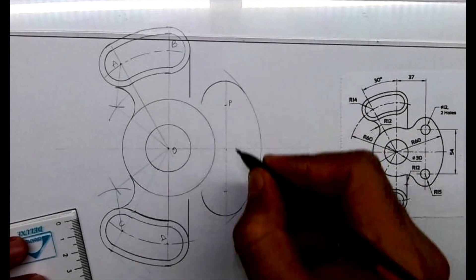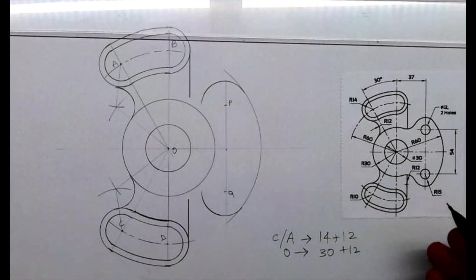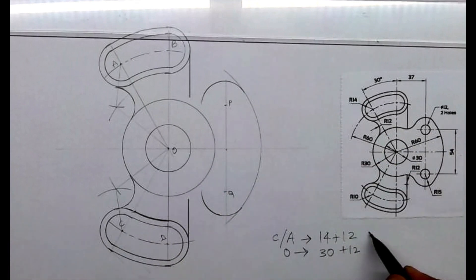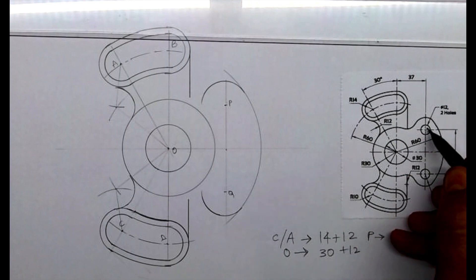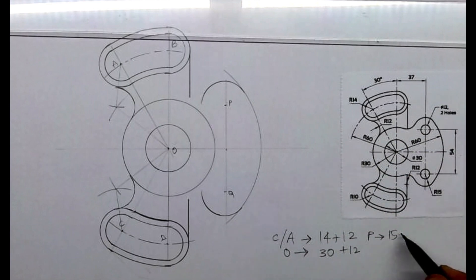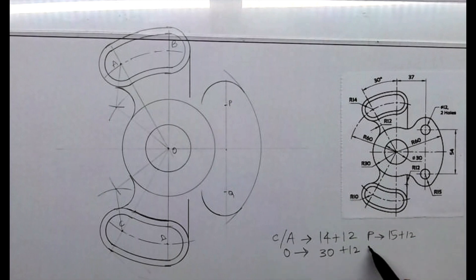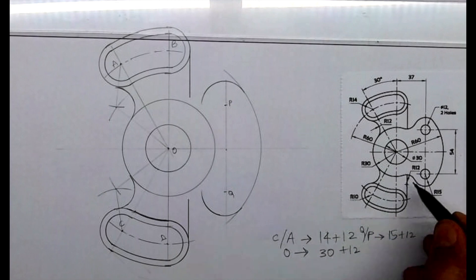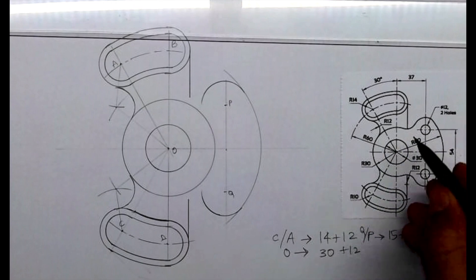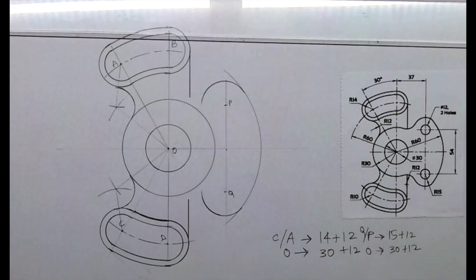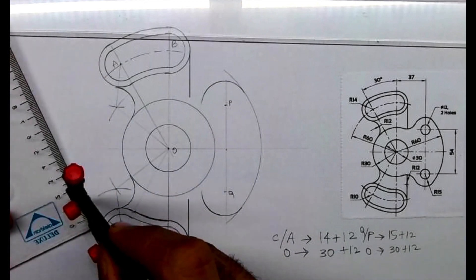After that, this is point P and this is point Q. From P and Q we can draw 15 plus 12 because we want to draw this external radius 12. So from P I will cut 15 plus 12, from Q also, and from O I will cut 30 plus 12. Wherever they intersect, from that point we can draw radius 12.